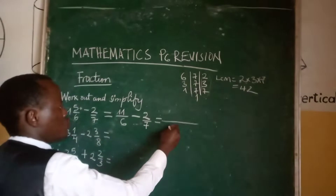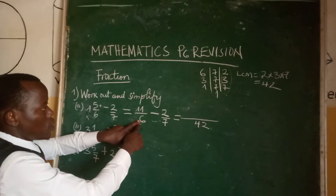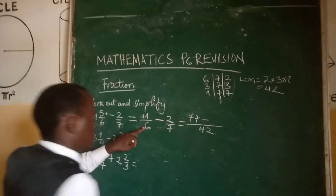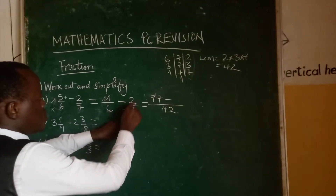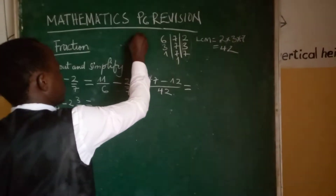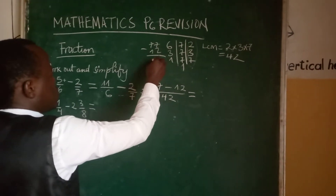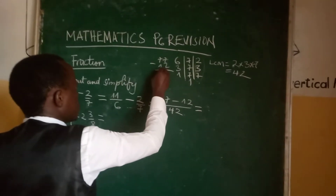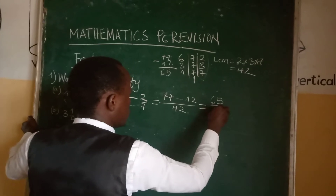The common denominator is 42. 42 divided by 6 equals 7, and 7 times 11 equals 77. Then 42 divided by 7 equals 6, and 6 times 2 equals 12. When you take 77 minus 12, we compute the subtraction digit by digit: we get 65. So the result is 65 over 42.